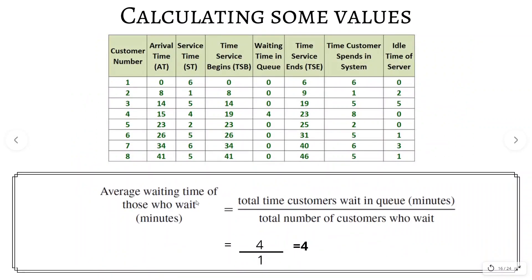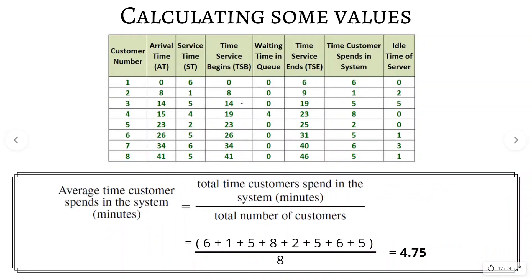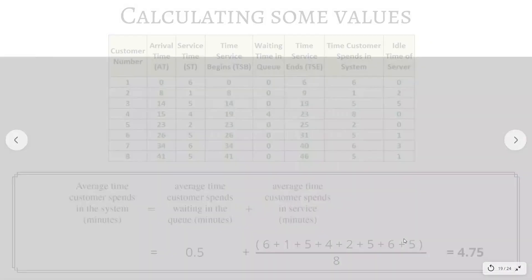For average waiting time of those who wait, only the fourth customer waited — 4 minutes total, divided by 1 customer, which equals 4. For average time a customer spends in the system, add all values from the time-in-system column and divide by 8. You can also compute this as average waiting time plus average service time, which yields the same result.